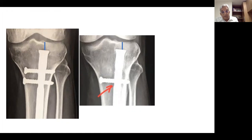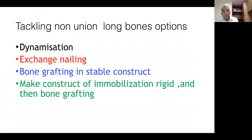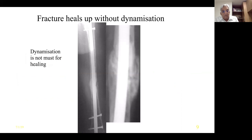Tackling non-union in long bones: the options are dynamization, exchange nailing, bone grafting in a stable construct, making the immobilization construct rigid, and then bone grafting. It is not always necessary to dynamize — the fracture heals up even without dynamization, and very often it does happen.